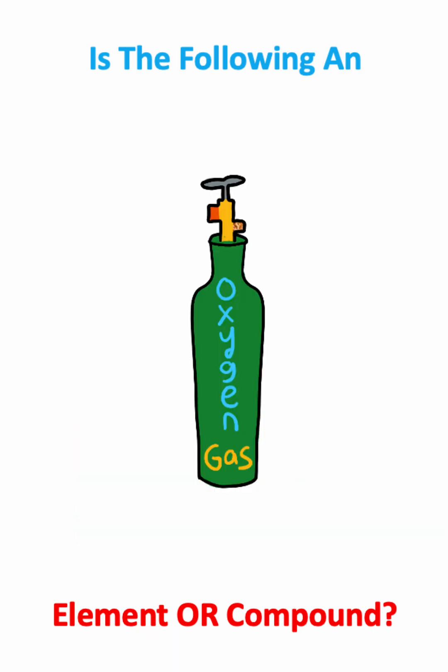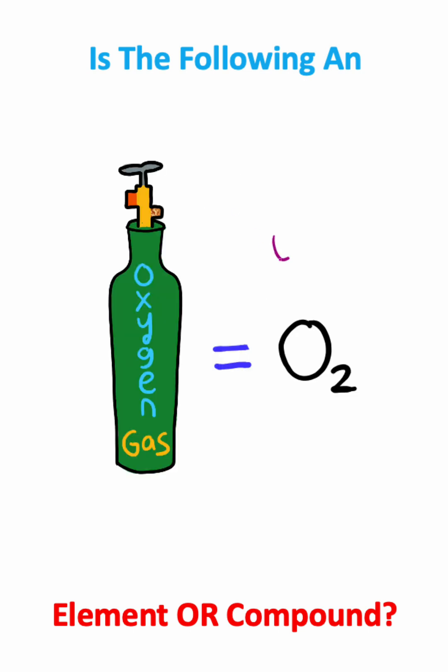Now what about oxygen gas? Well oxygen gas is the same thing as O2, and notice how we only have oxygen atoms. That means that this is an element.